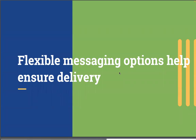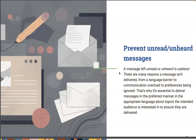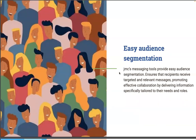Flexible messaging options help ensure delivery. A message left unread or unheard is useless. There are many reasons a message doesn't get delivered, from the language barrier to communication overload to preferences being ignored. That's why it's essential to deliver messages in a preferred manner, in the appropriate language, about topics the intended audience is interested in — getting the right message to the right people. JMC's messaging tools provide easy audience segmentation, ensuring that recipients receive targeted and relevant messages, promoting effective collaboration.